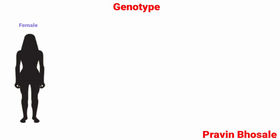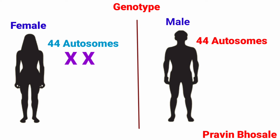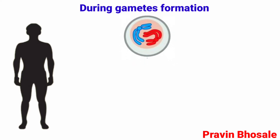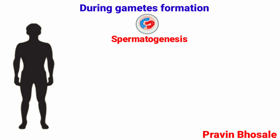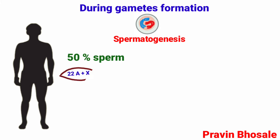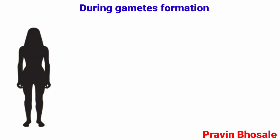Thus, the genotype of female is 44 autosomes plus XX, and male is 44 autosomes plus XY. During gamete formation in male, the diploid germ cells in testes undergo spermatogenesis to produce two types of haploid sperm. 50% of sperm contains 22 autosomes and X chromosome, while 50% of sperm contains 22 autosomes and Y chromosome.